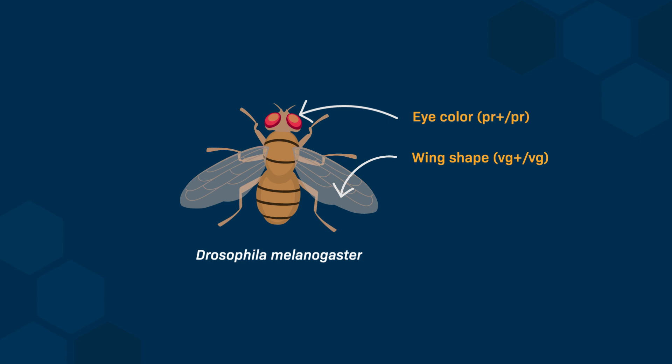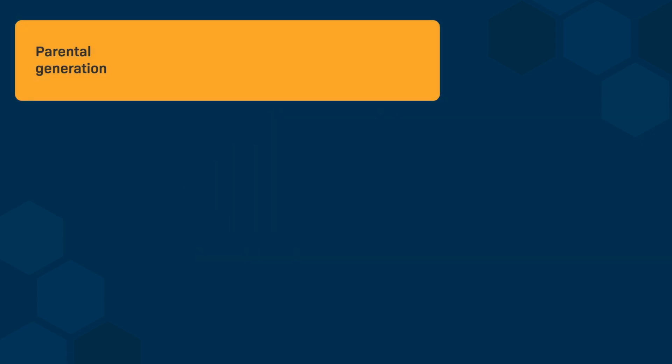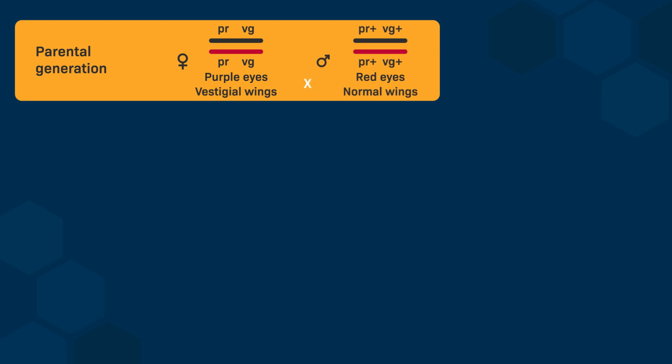Both of these genes are on chromosome 2. We'll start with true breeding parents. One is a female with purple eyes and vestigial wings — she carries two copies of the PR allele and two copies of the VG allele. This true breeding female is crossed with a true breeding male with red eyes and normal wings, characterized by two copies of the PR-plus allele and two copies of the VG-plus allele.